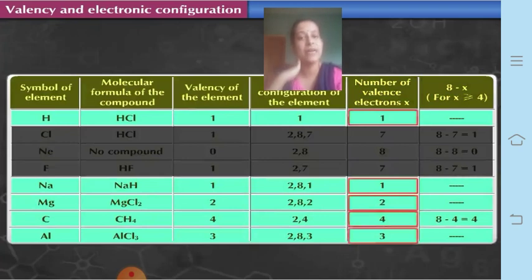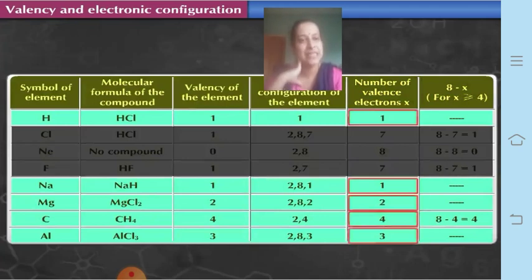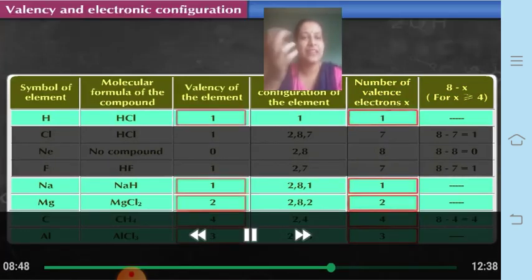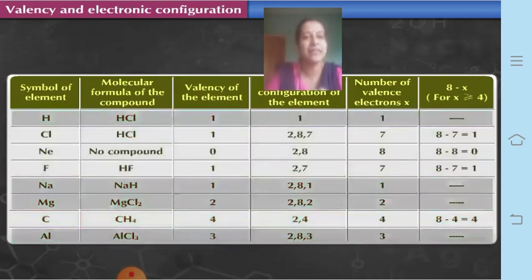For hydrogen, sodium, magnesium, carbon, and aluminium, the number of valence electrons and the valency are the same: hydrogen has 1 valence electron and valency 1; sodium has 1 valence electron and valency 1; magnesium has 2 valence electrons and valency 2; carbon has 4 valence electrons and valency 4; and aluminium has 3 valence electrons and valency 3. So the number of valence electrons in certain elements is the same as their valency.